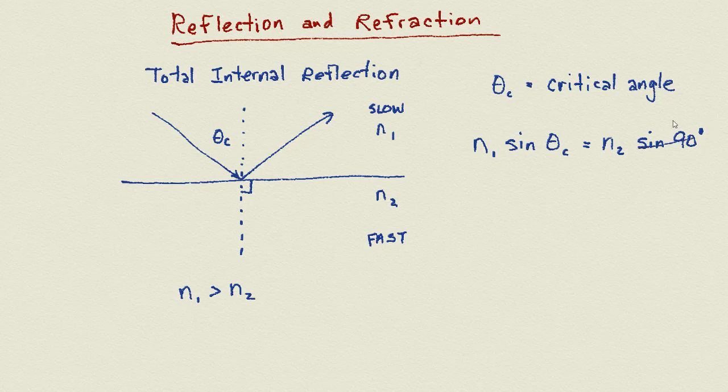Now the sine of 90 degrees is 1, so it just disappears. That means that the sine of the critical angle is n2 over n1. And if we want to solve for the critical angle, it is going to be the inverse sine of n2 over n1.